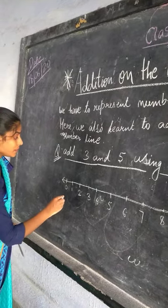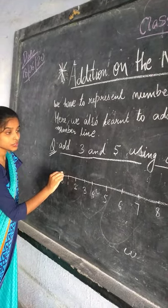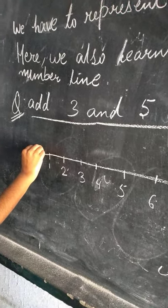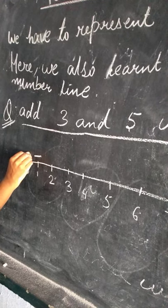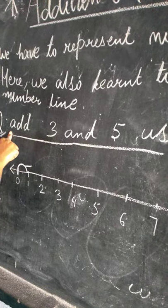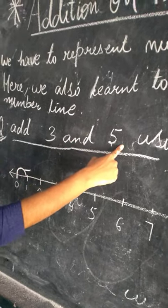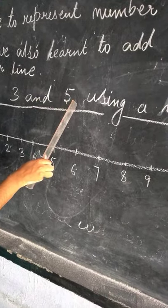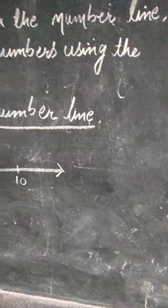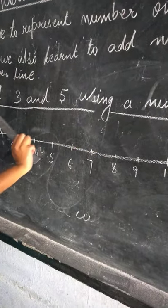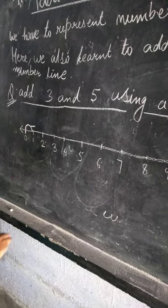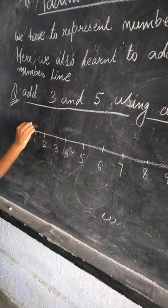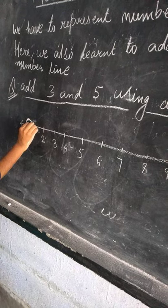Firstly we will start from zero. Start from zero and move forward three. The first number is three. Add three and five using a number line — three and five using a number line. So start from zero, then move forward three.